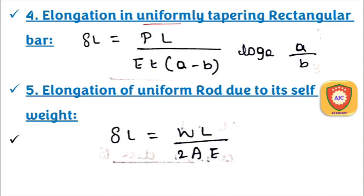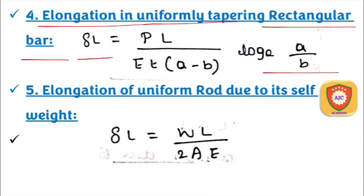For the uniformly tapering rectangular section, the formula is δl = PL / [E · t · (a - b) · log_e(a/b)]. This is the elongation formula for a rectangular bar in the uniformly tapering section.